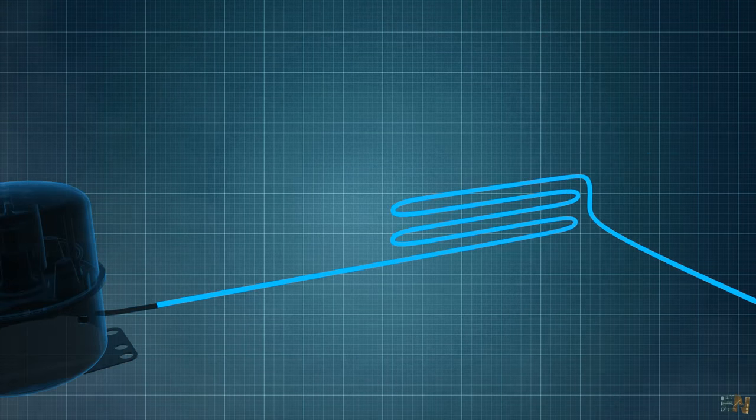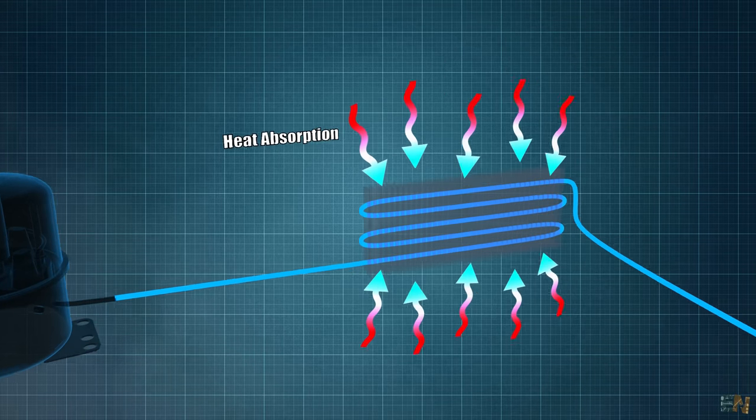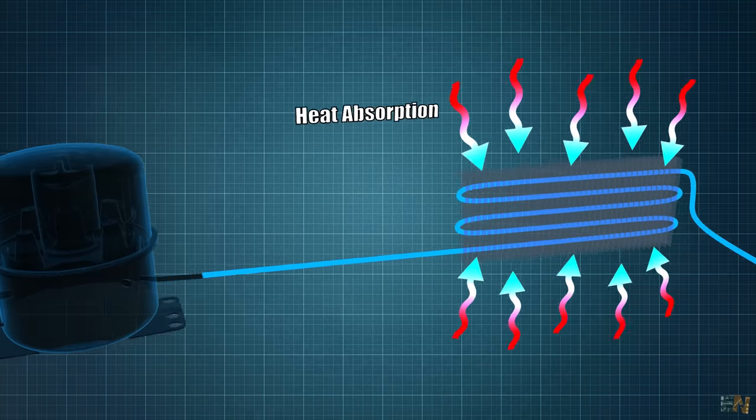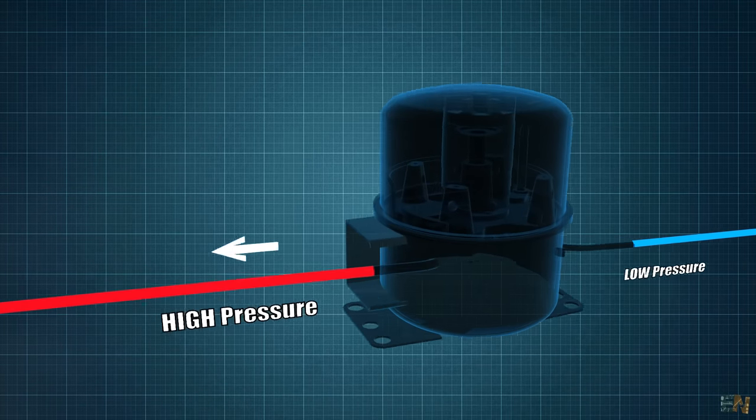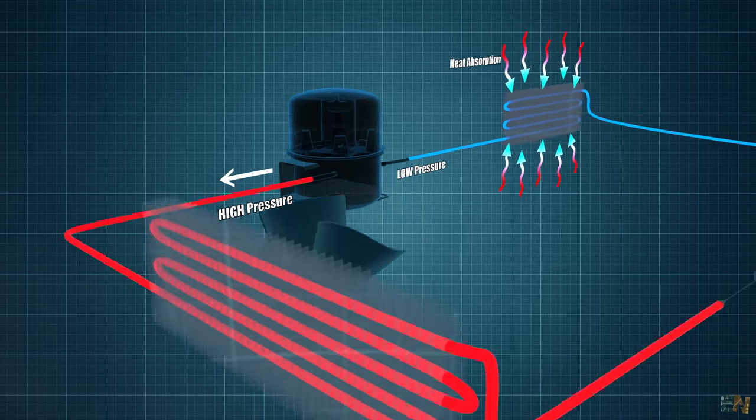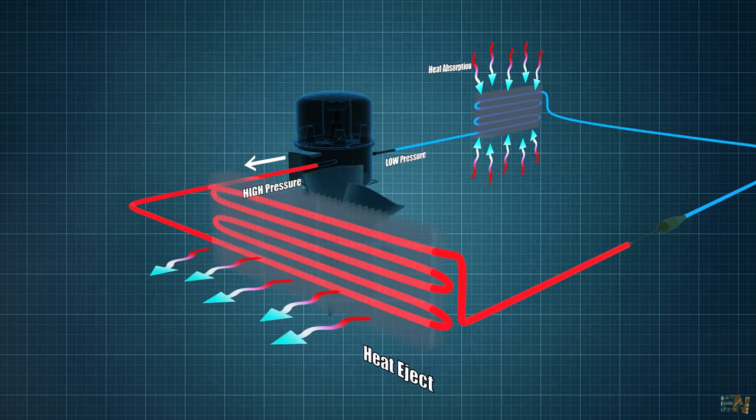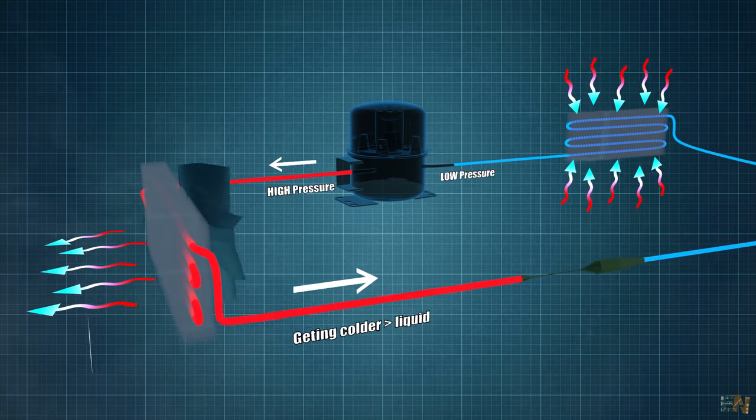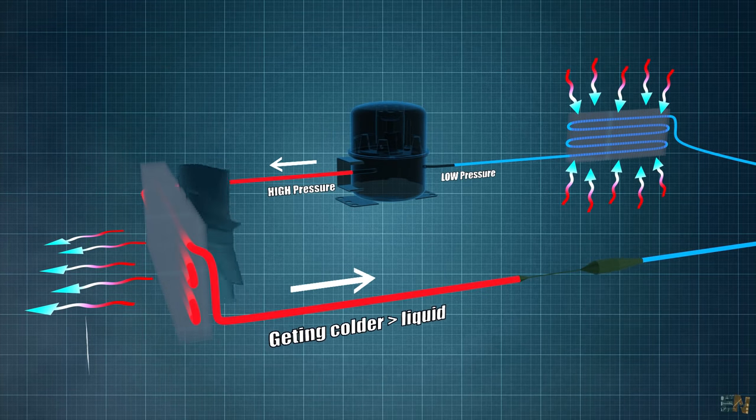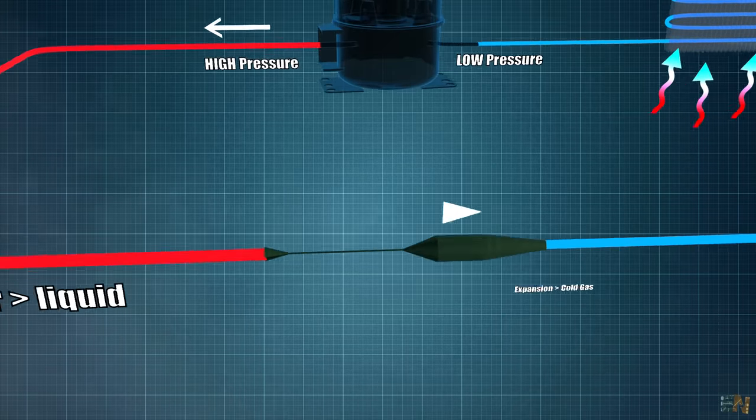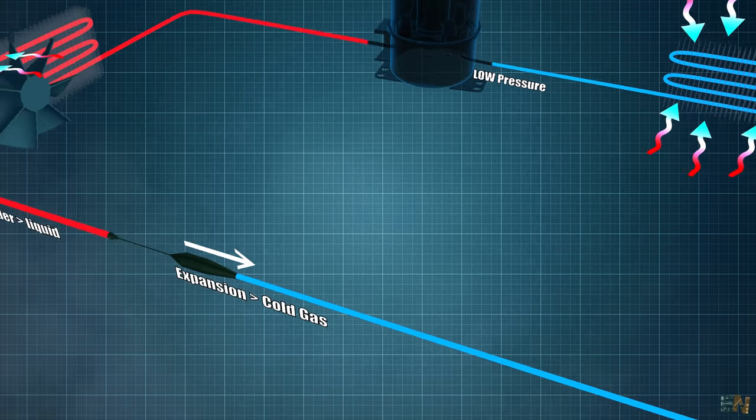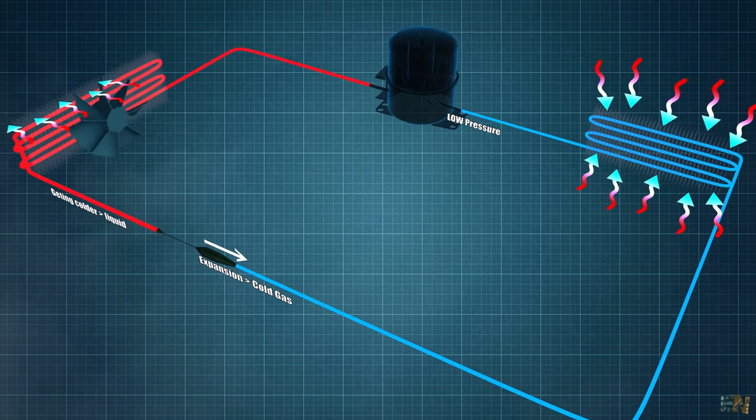Let's see this process once again but faster. This cold refrigerant will absorb the heat from the room and by that will get a bit hotter. The compressor increases the pressure once again and this will get even hotter. On the condenser, the heat is ejected on the outside and in this process the refrigerant is lowering the temperature and changing back into a liquid. Finally, when this liquid passes rapidly from high pressure to low pressure, it turns back into a gas and at very low temperatures. From here, the process repeats on and on.